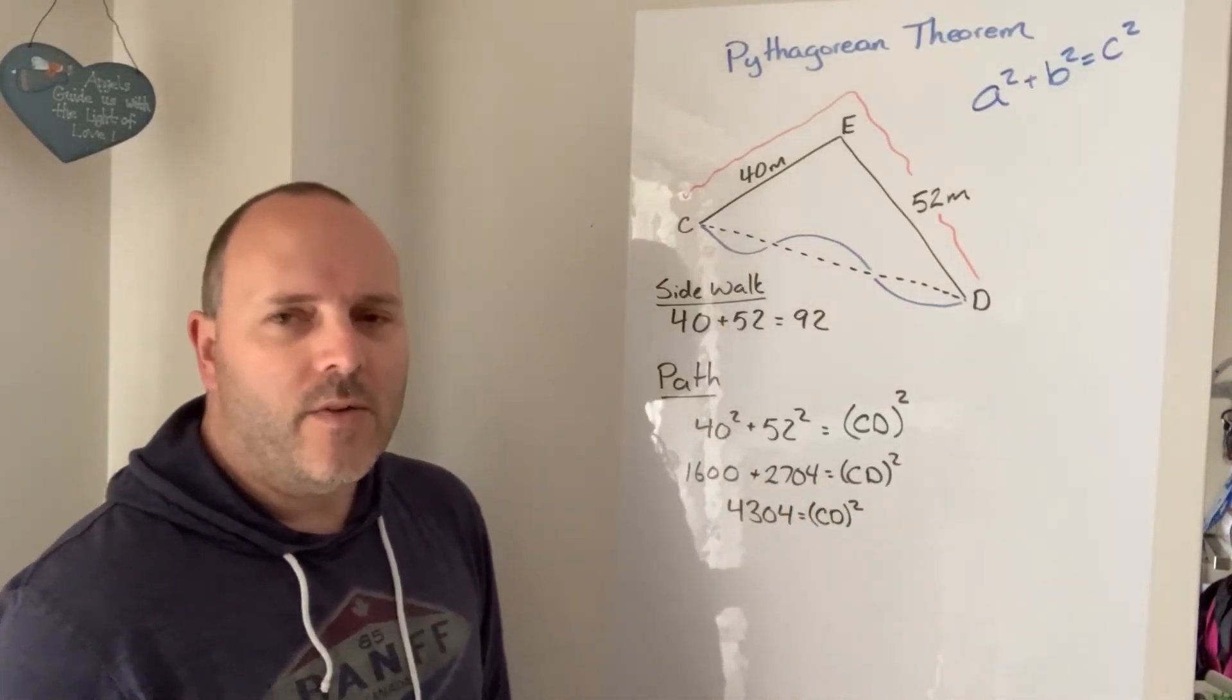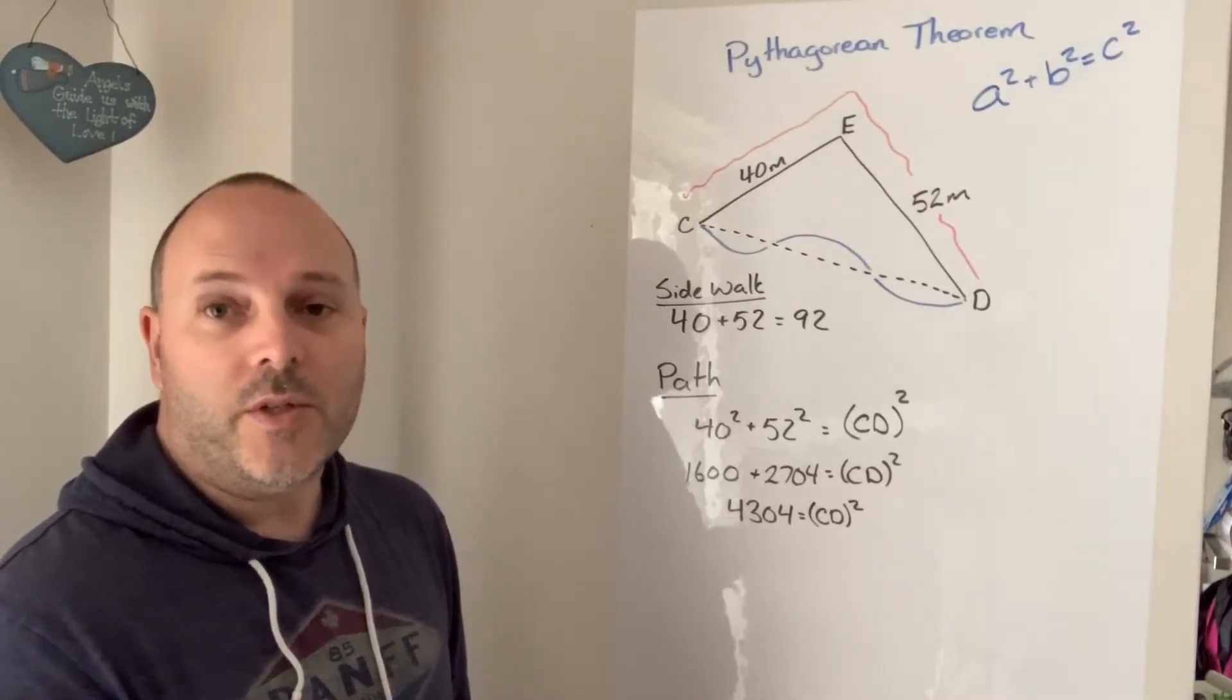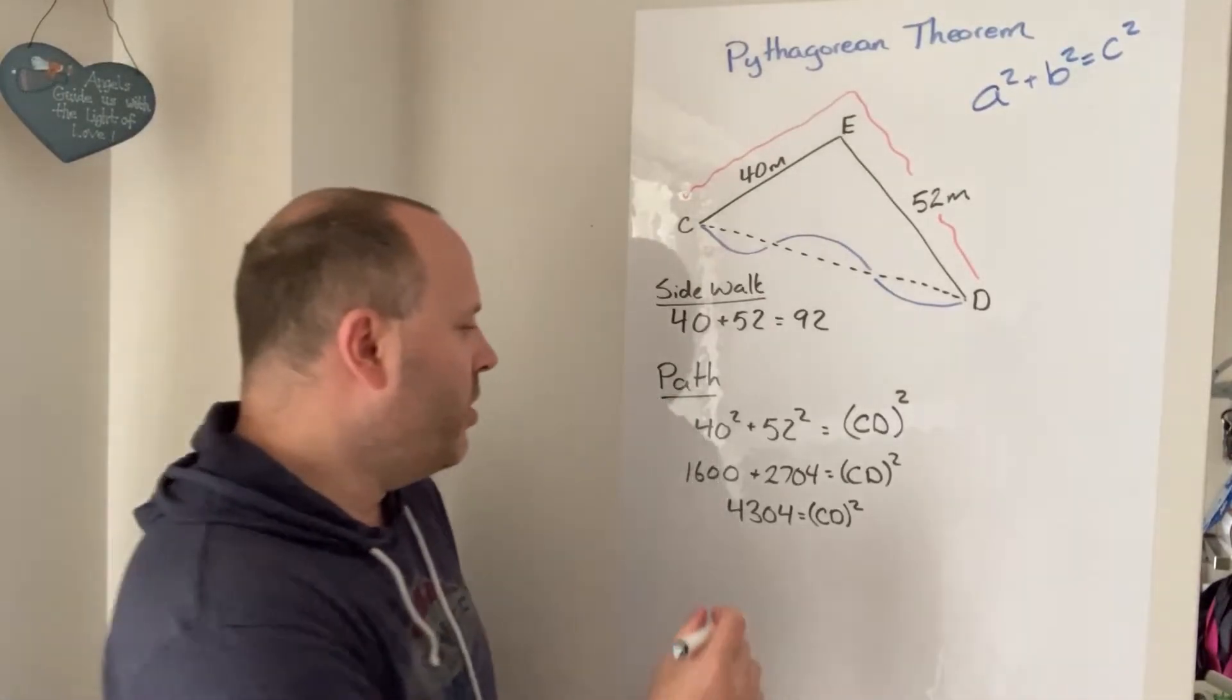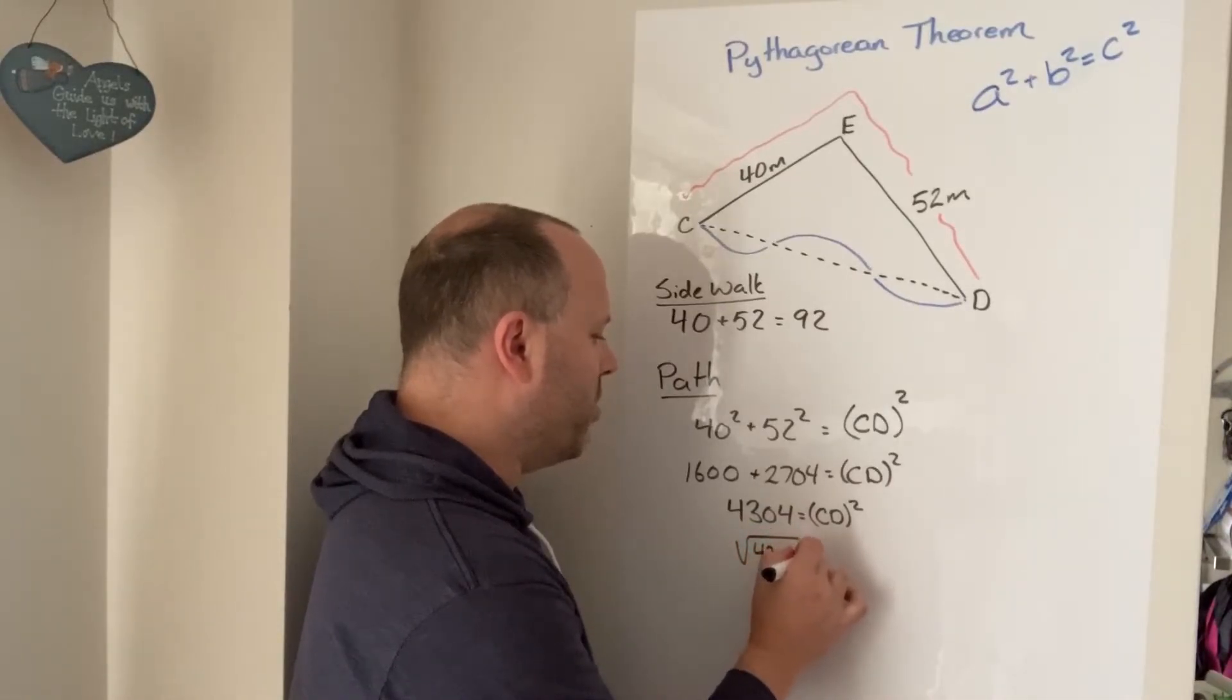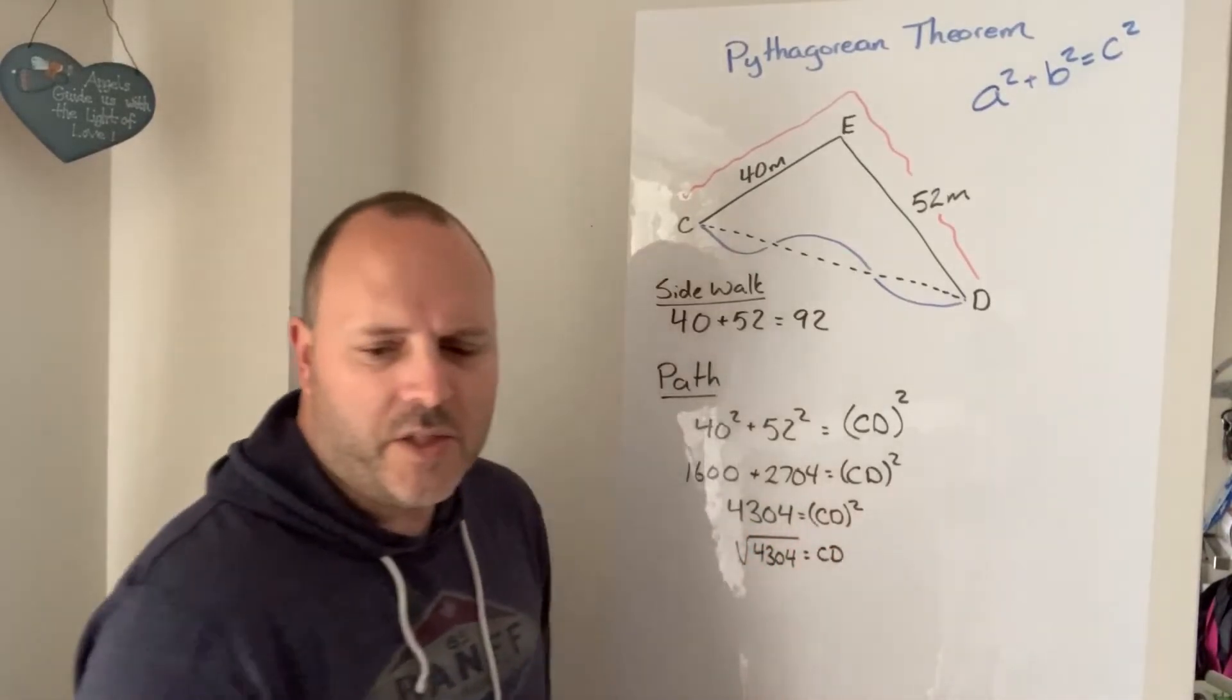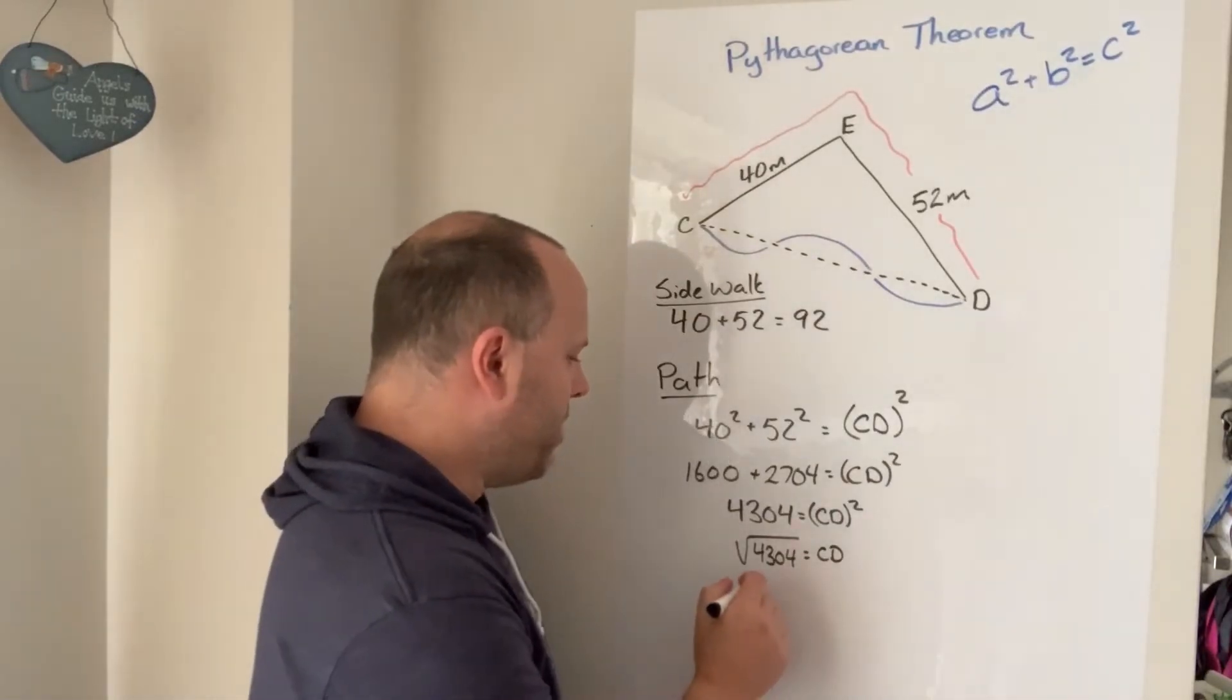That's CD squared, and then of course the opposite operation of squaring something is taking the square root. So if I take the square root I'll find the distance from C to D and I get that to be 65.6.